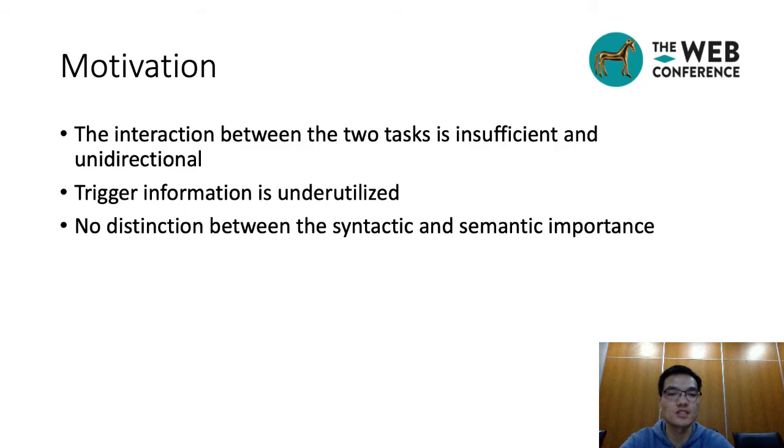Current joint models have made quite some progress. However, the following issues still remain. First, entity recognition and relation extraction tasks are supposed to be mutually beneficial. But current interaction between entity recognition and relation extraction is insufficient and unidirectional. Secondly, trigger information is underutilized in relation extraction. They are essential for relation extraction but overlooked.